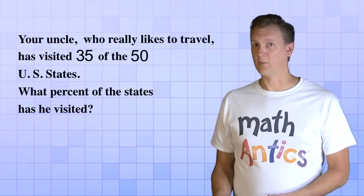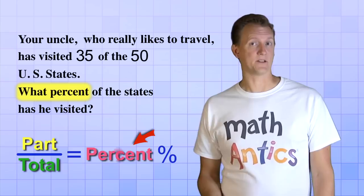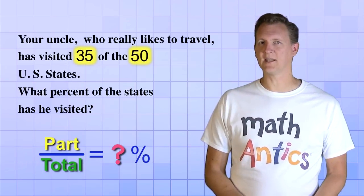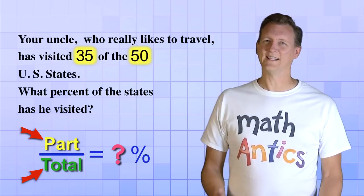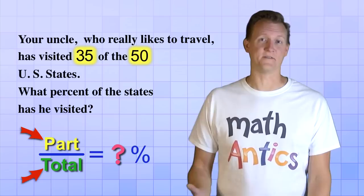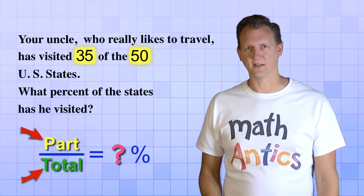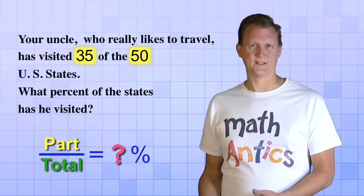The key words in this problem are what percent, because they let us know that it's the percent that's missing. So, the two numbers that it gives us must be the total and the part we have. Well, in this case, it's not really the part we have, it's the part that our uncle has visited, but you get the idea. And sometimes, it can be hard to tell which number the total is. Often, it's the bigger number, but not always, and that's where the word of can help us out.